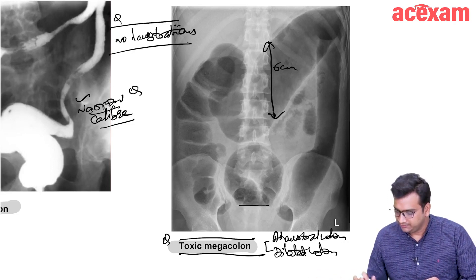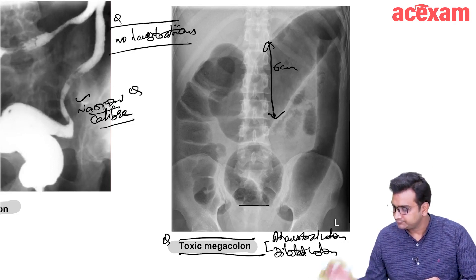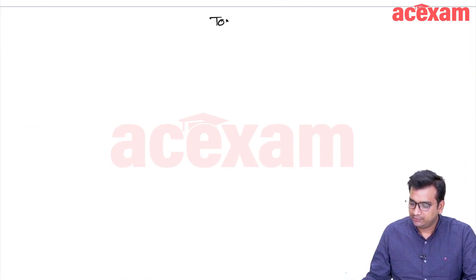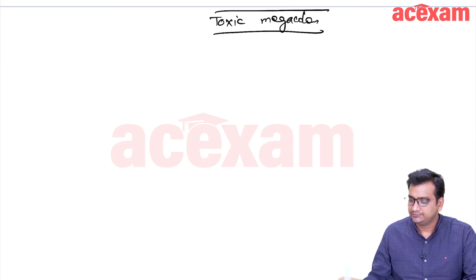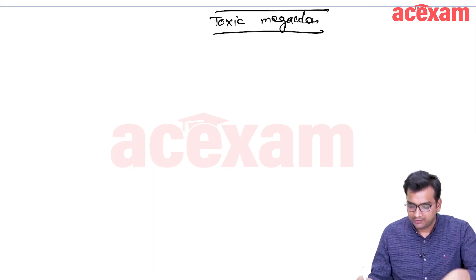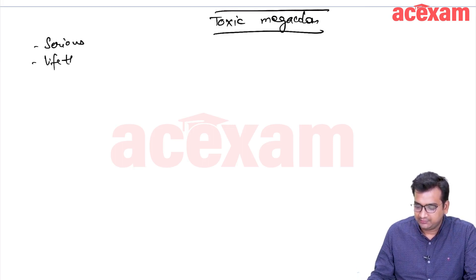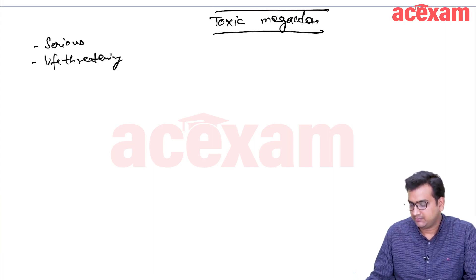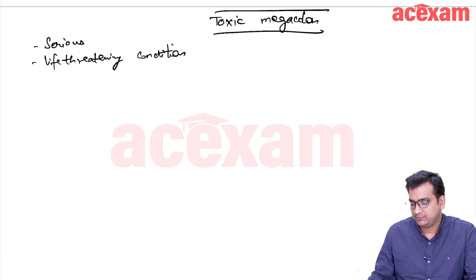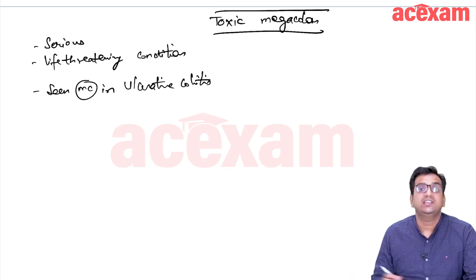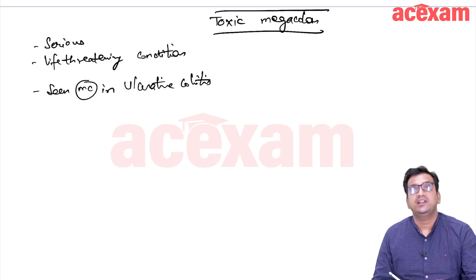Now we are going to discuss toxic megacolon in detail. This image is very important and it is frequently asked. Now it is a serious condition and a life-threatening condition seen most commonly in ulcerative colitis but it can also be seen in Crohn's colitis, pseudomembranous colitis, infectious colitis.